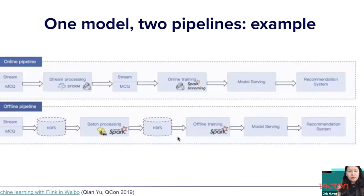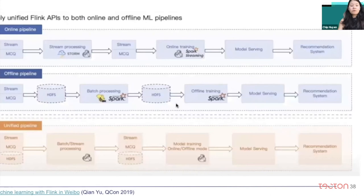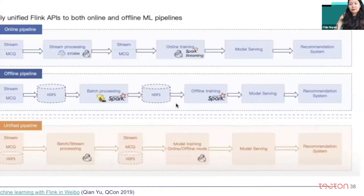Here's the example of Weibo. Before, they actually had two completely different pipelines for training and inference — an offline pipeline and an online pipeline. Weibo spent a lot of effort unifying these pipelines using Apache Flink. You can see the previous pipeline on top and the unified pipeline they have now. And it's not just Weibo — we have seen this at companies like Uber, Alibaba, and Lyft.